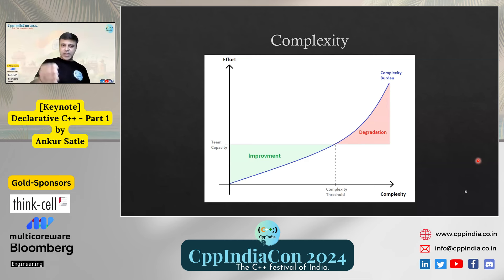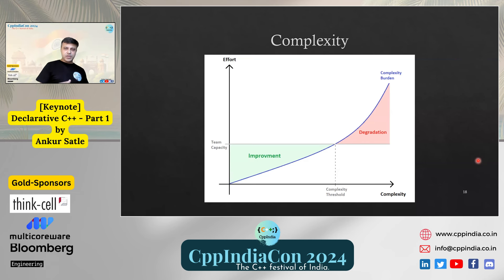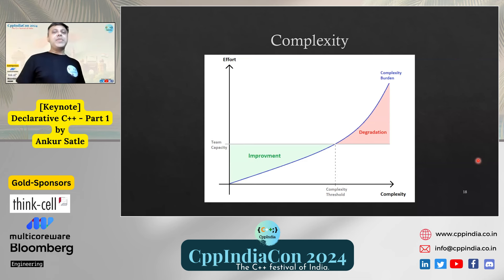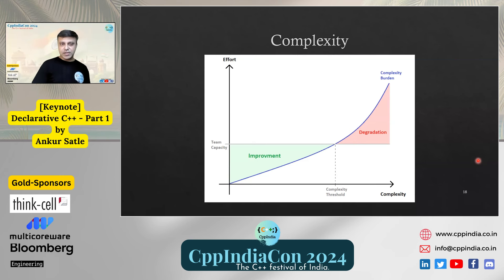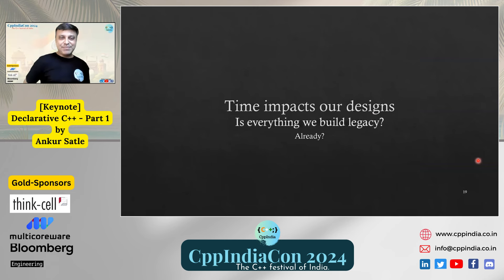There is a tipping point — you see this kind of graph all over the internet. Beyond a threshold the degradation is so much that the complexity burden overweighs and you hear of rewrites. It's always good to keep acting and stay in the improvement zone rather than land in complexity — that is why I'm having this discussion on declarative programming. Time impacts everything we build; everything is already legacy the moment we want to change it.